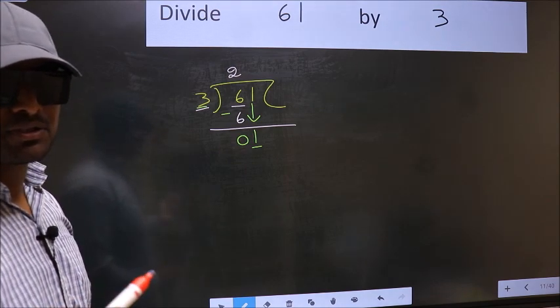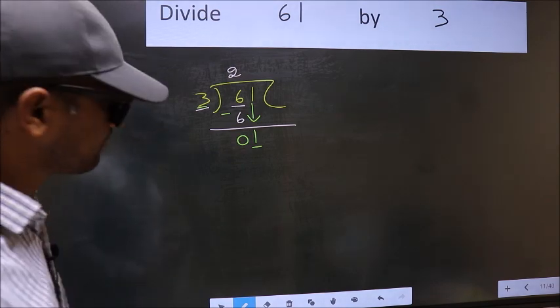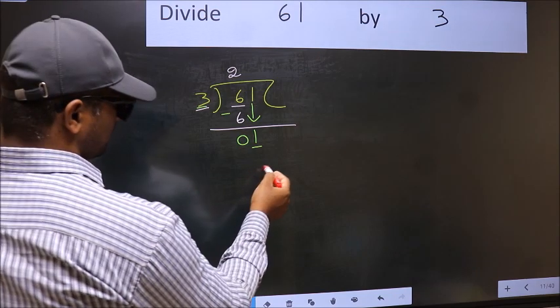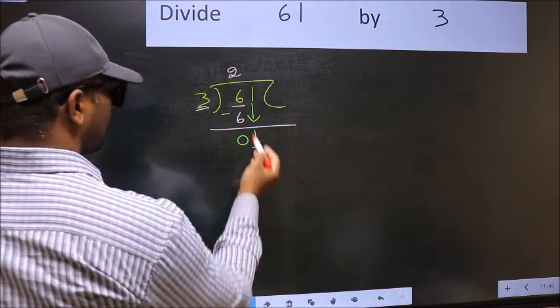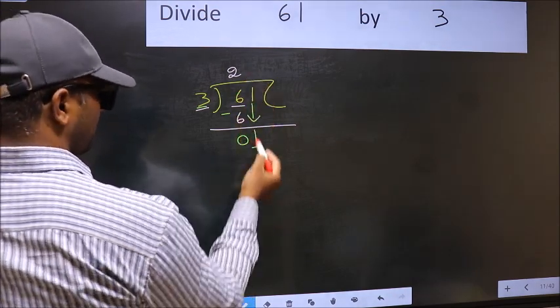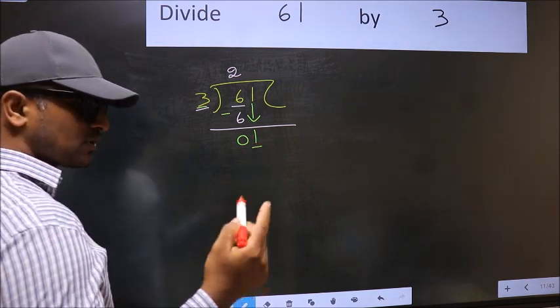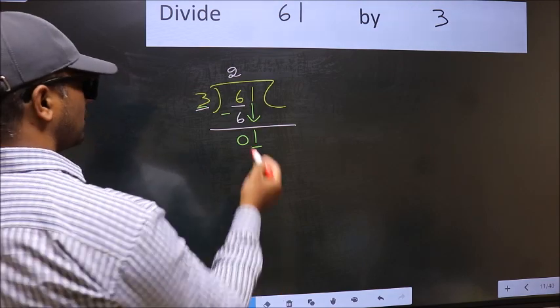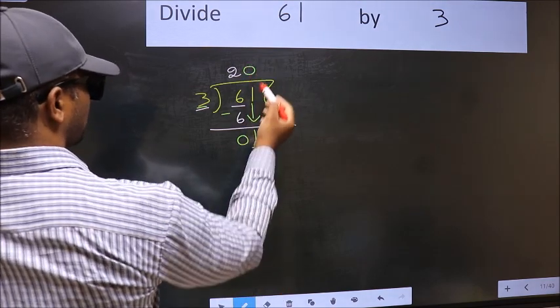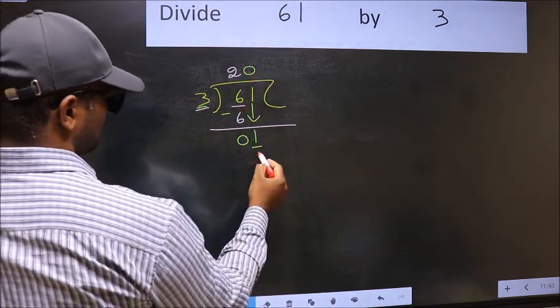Instead, what number should we write here? If I take 1 here, we get 3 here, but 3 is larger than 1. So what we should do is take 0. So 3 into 0 is 0.